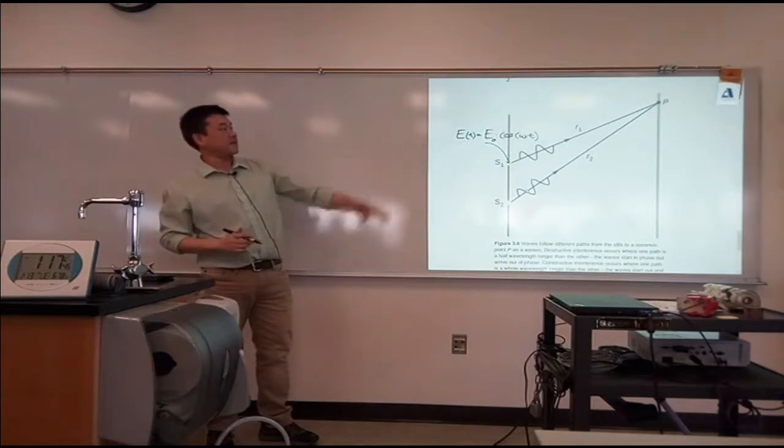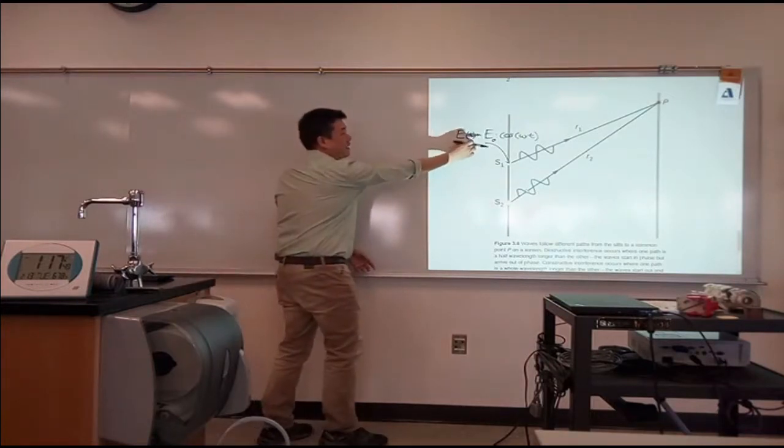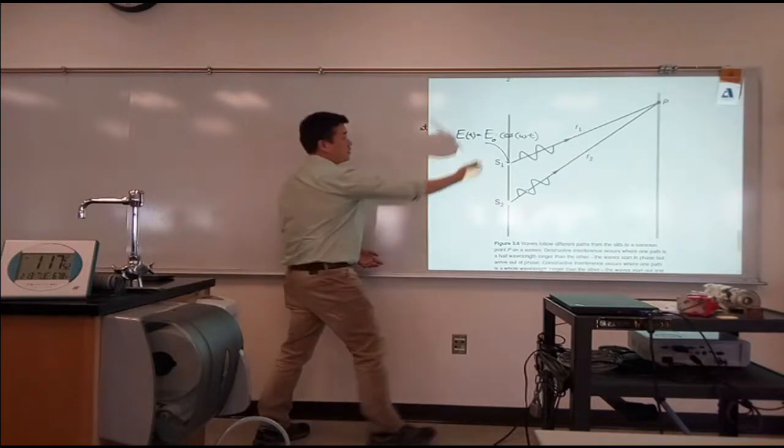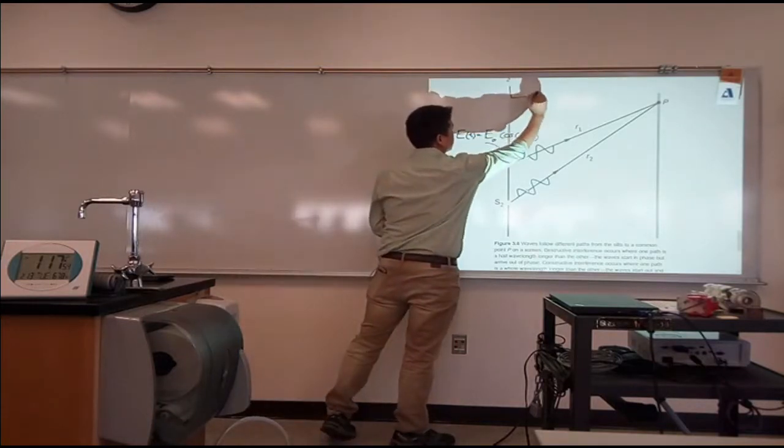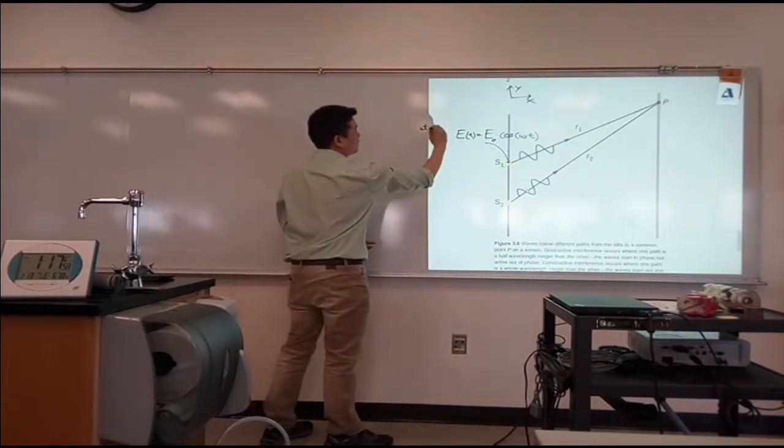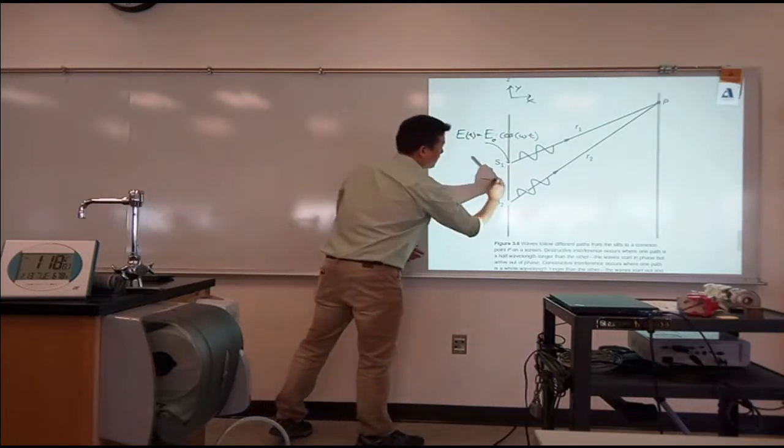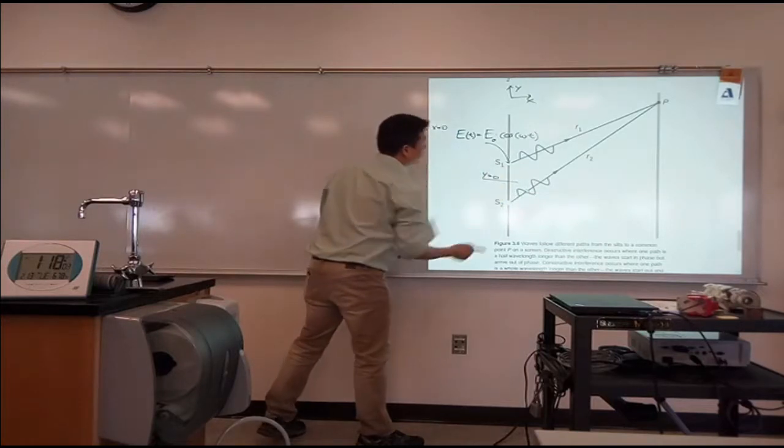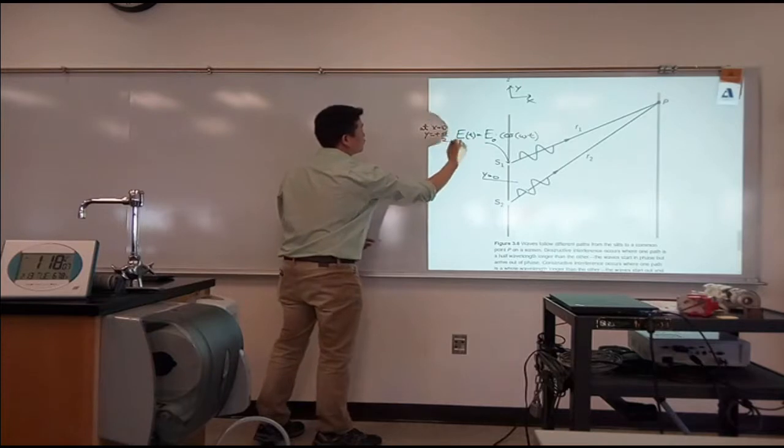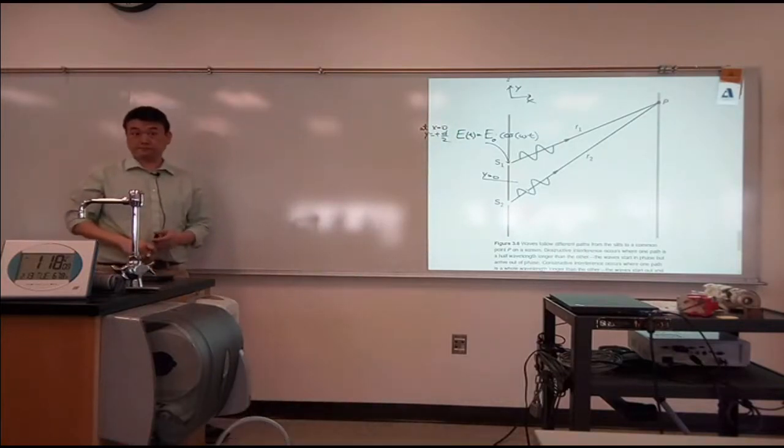And I can say that because I'm describing the electric field at a particular point in space. So if I'm defining my axis this way, x and y, then it would be the electric field at x equals zero, and let's say y is equal to zero here, so that y equals plus d over two. Good?